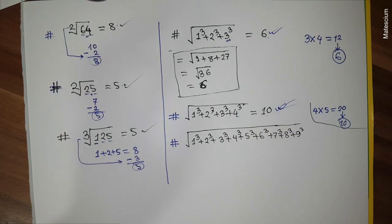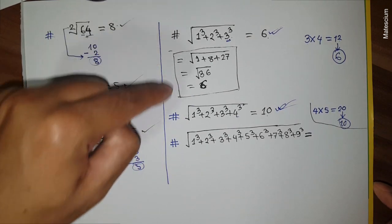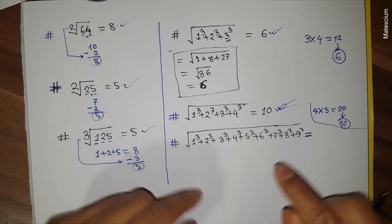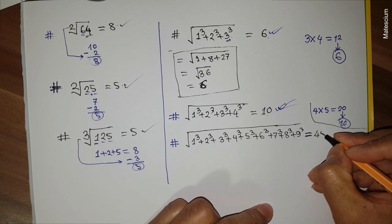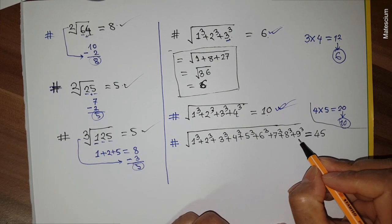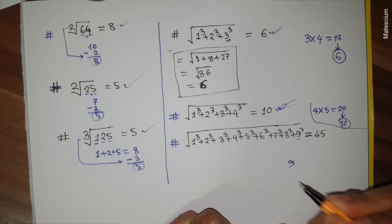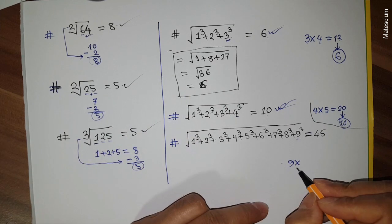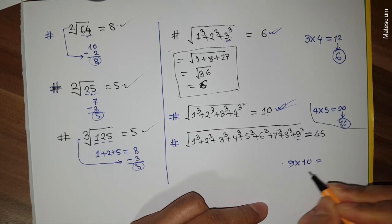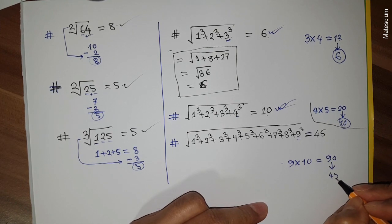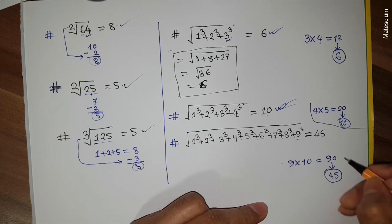Let's try a larger example: 1³ + 2³ + ... + 9³. What's the answer within one second? If you understood the previous examples, you'll solve this in one second. The answer is 45. The last number is 9, multiply by its next number 10 — 9 times 10 is 90 — and half of 90 is 45. That's the answer.